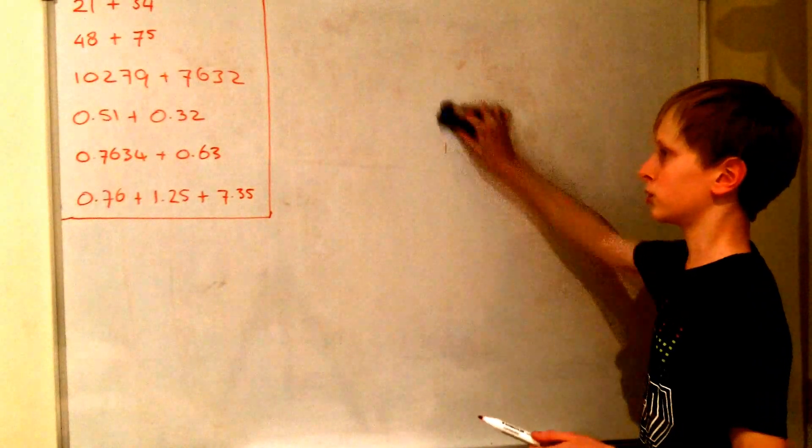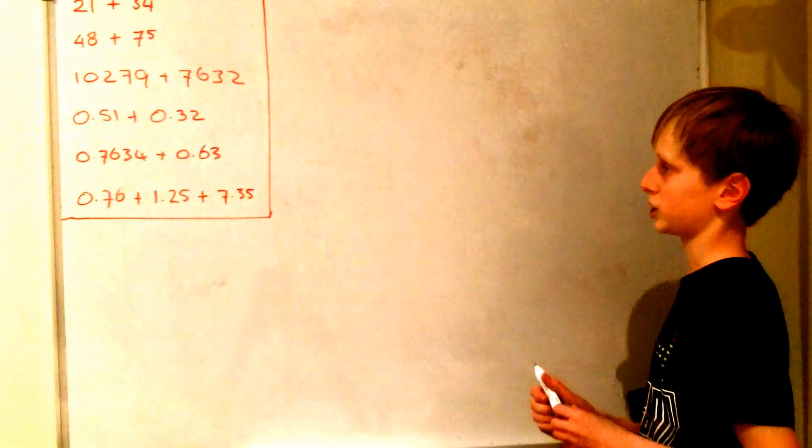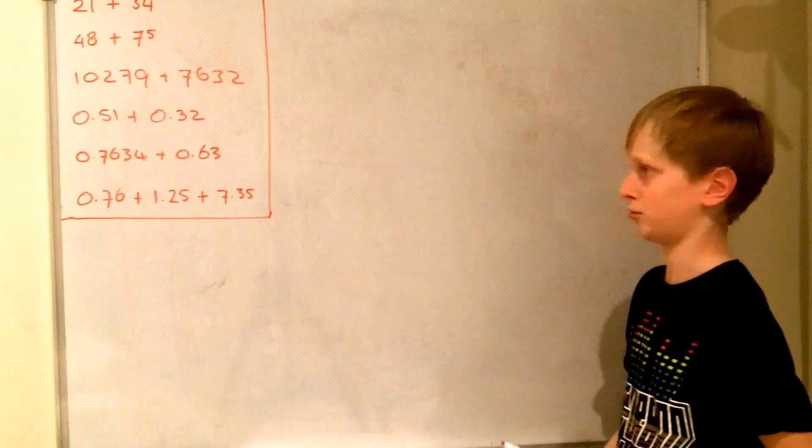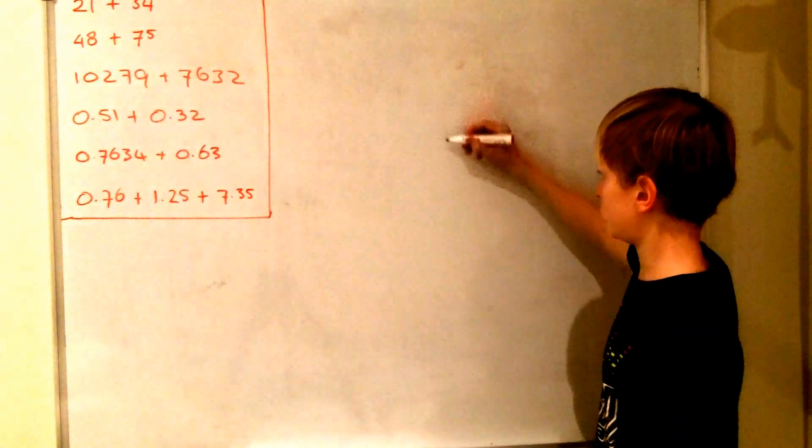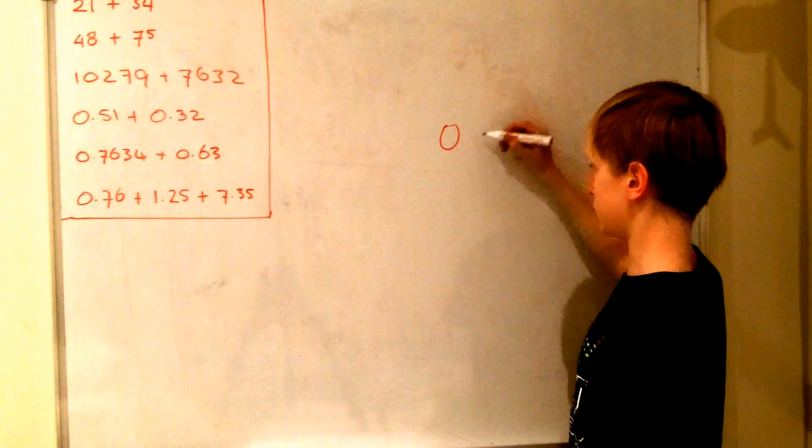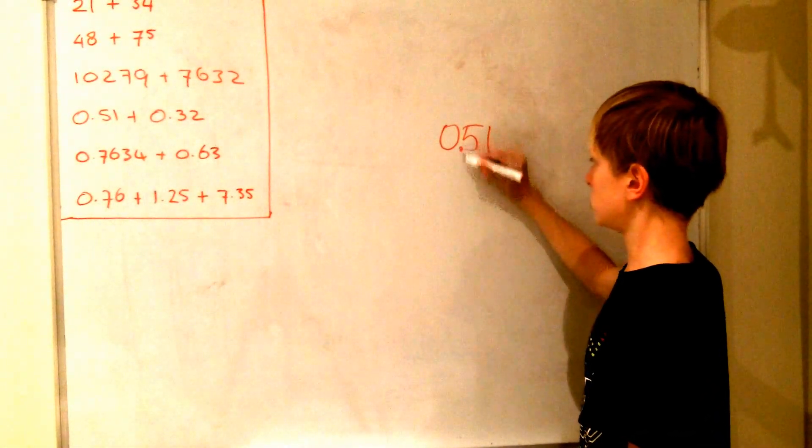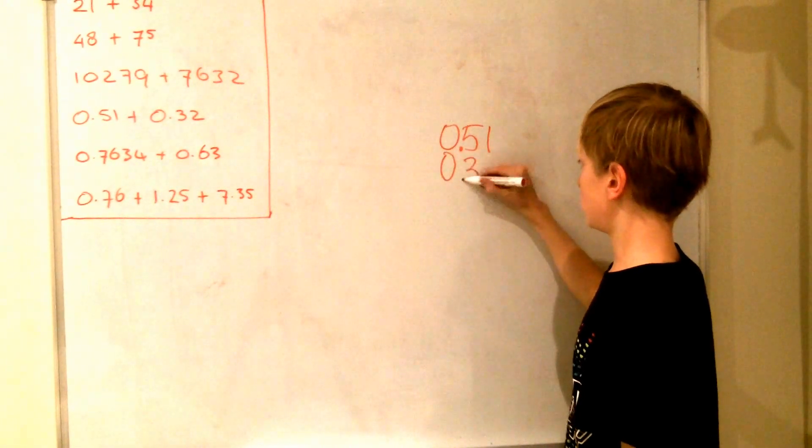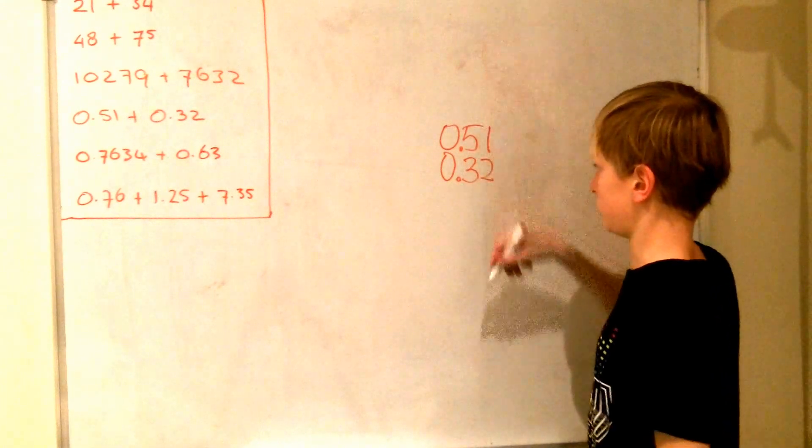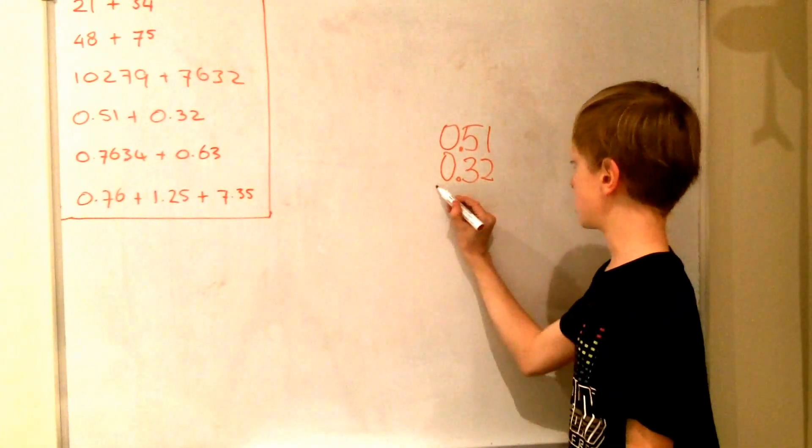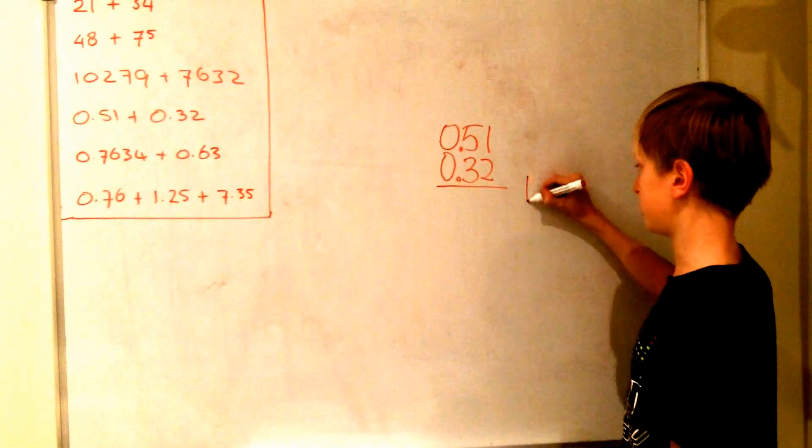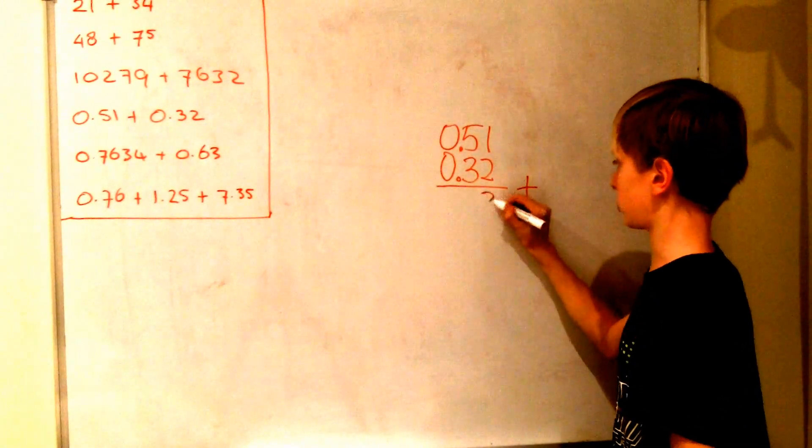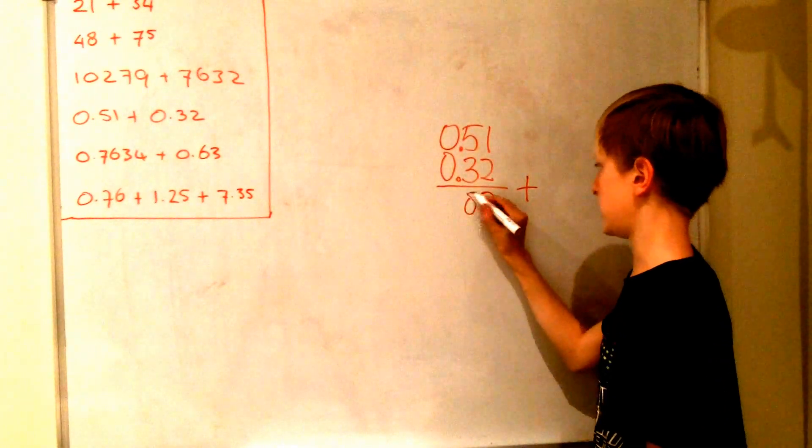So now what would you do if you had decimal places? Well basically you would do exactly the same. So here we have the question 0.51 plus 0.32. So again we just write them underneath each other. But we have to make sure that the decimal point is in the same place. So the decimal points have to be at the same level. So 2 and 1 is 3. 5 and 3 is 8.